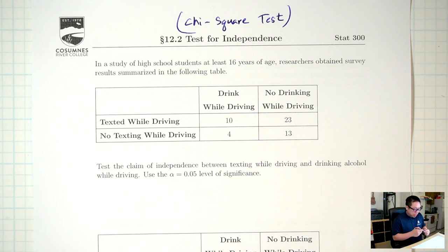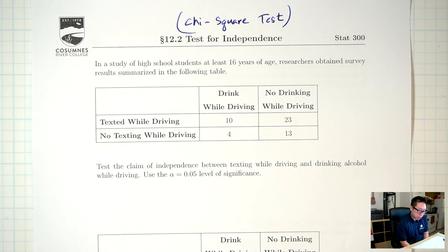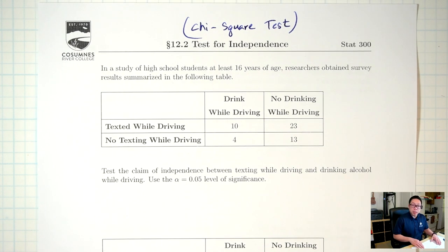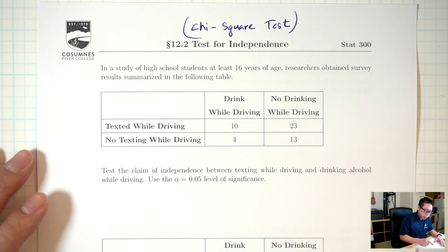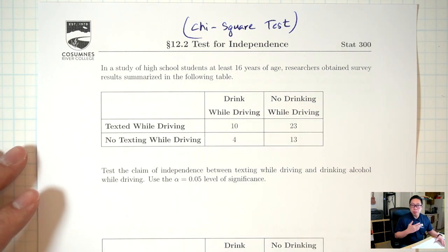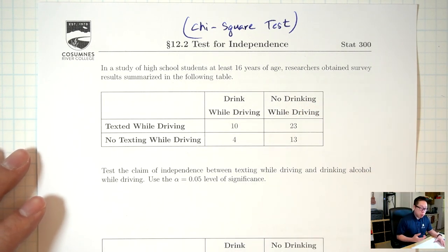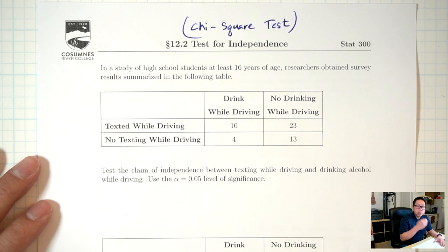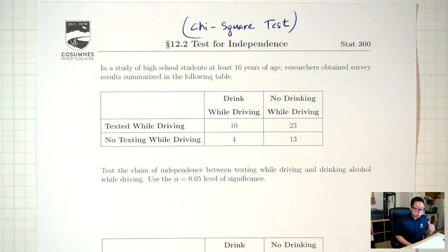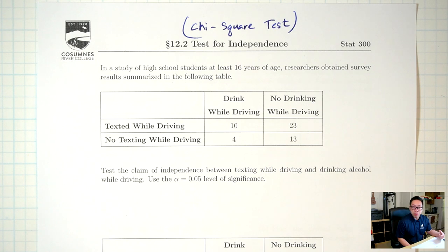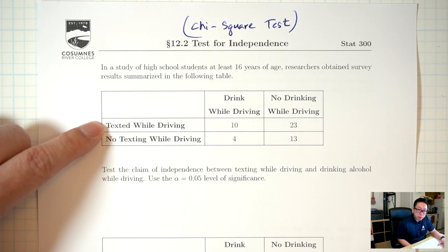So let's take a look at the situation here. In a study of high school students at least 16 years of age, researchers obtained survey results summarized in the following table. Now this is going to be a chi-square test because the numbers here represent counts — they're counting how many people are in certain categories. The difference between today versus last time is that we have two sets of categories. We're actually asking people two things. We're asking: do you text and drive?